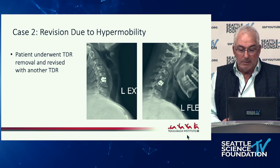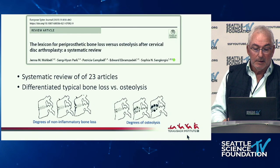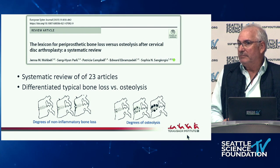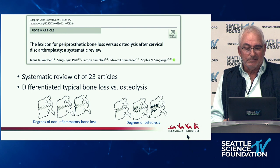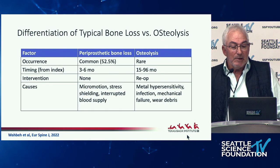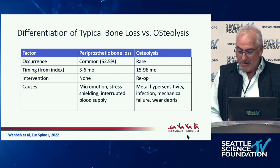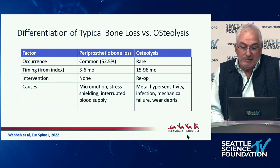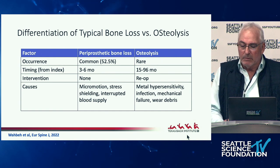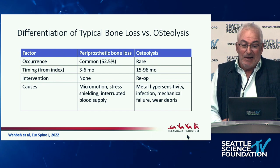Most people consider the original ProDisc — I call it the OG — a great revision disc. There was a paper from European Spine Journal that looked at periprosthetic bone loss and attempted to define pathologic versus physiologic changes. It was a systematic review: periprosthetic bone loss was common, occurred early, didn't require intervention, and was essentially Wolf's Law stress shielding. Osteolysis is rare, occurs later, and in their series more often required re-operation. The etiologies they identified were metal sensitivity, infection, mechanical failure, and wear debris — a pretty spot-on paper.